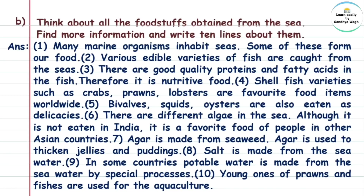Answer: Many marine organisms inhabit seas — inhabit means rahane, so many sea creatures live in the ocean. Some of these form our food. Various edible varieties of fish — edible means khane yogya — are caught from the sea. There are good quality proteins and fatty acids in fish, therefore it is nutritive food — nutritive means postic.